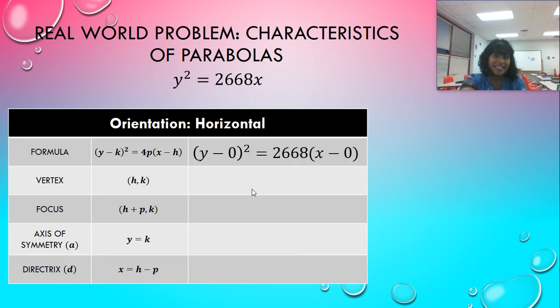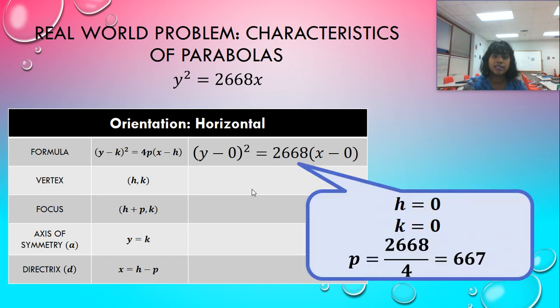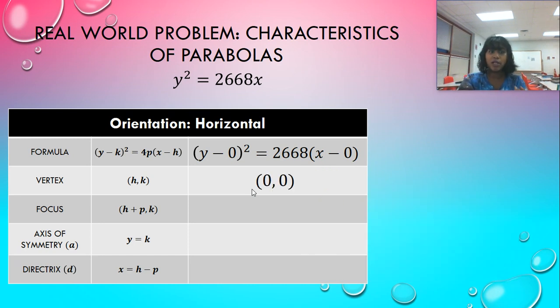So H and K are really easy. They're just zeros. But what about my P value? It's not 2668, but it is divided by 4, so it's going to be 667. The most important thing to recognize from that is that it is positive, and that we can use it to calculate our focus and our directrix. So I plot my vertex. I calculate my focus. That one's nice and easy. I plot my axis of symmetry, and then I calculate my directrix. Again, nice and easy.